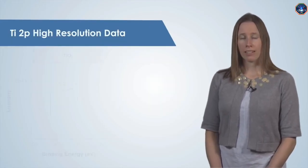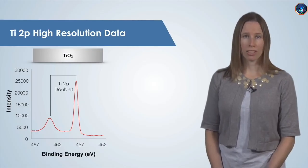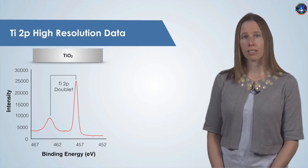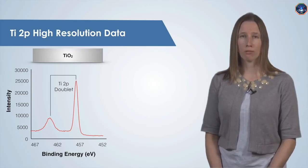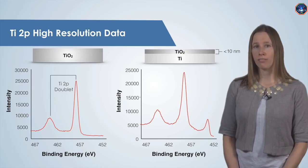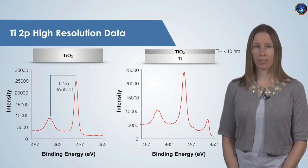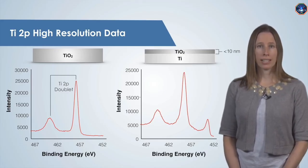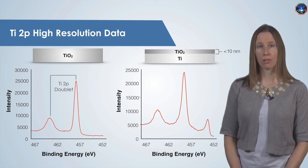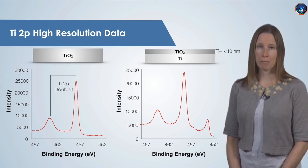The titanium 2p data for TiO2 is shown here, and we observe the expected doublet with peak positions consistent with titanium in the 4-plus oxidation state. But, if we have a very thin film of TiO2 on top of titanium metal, we may be able to observe the signal from both the TiO2 and the titanium metal.